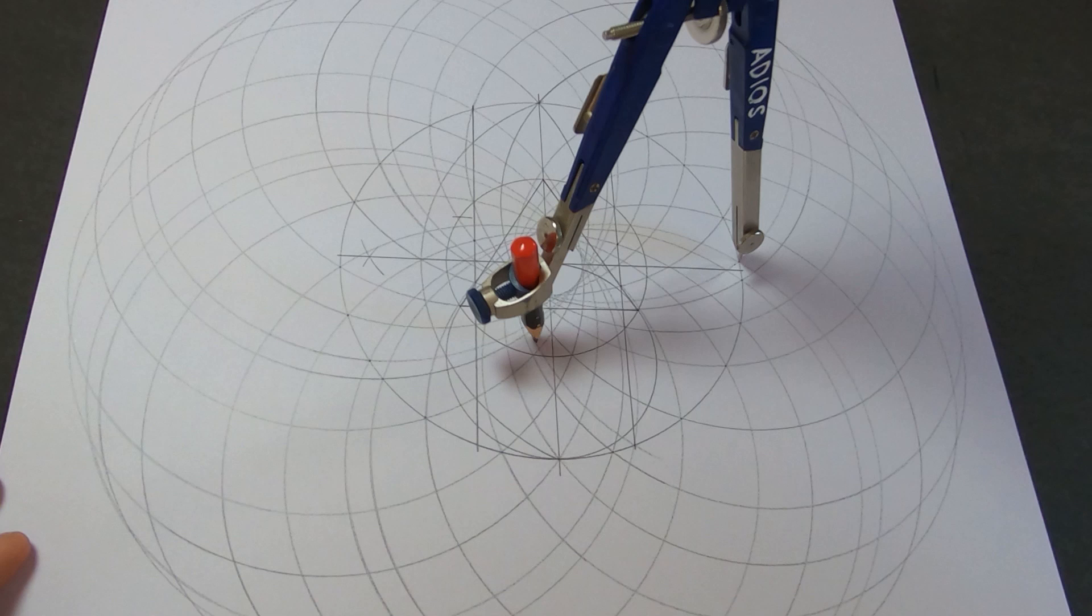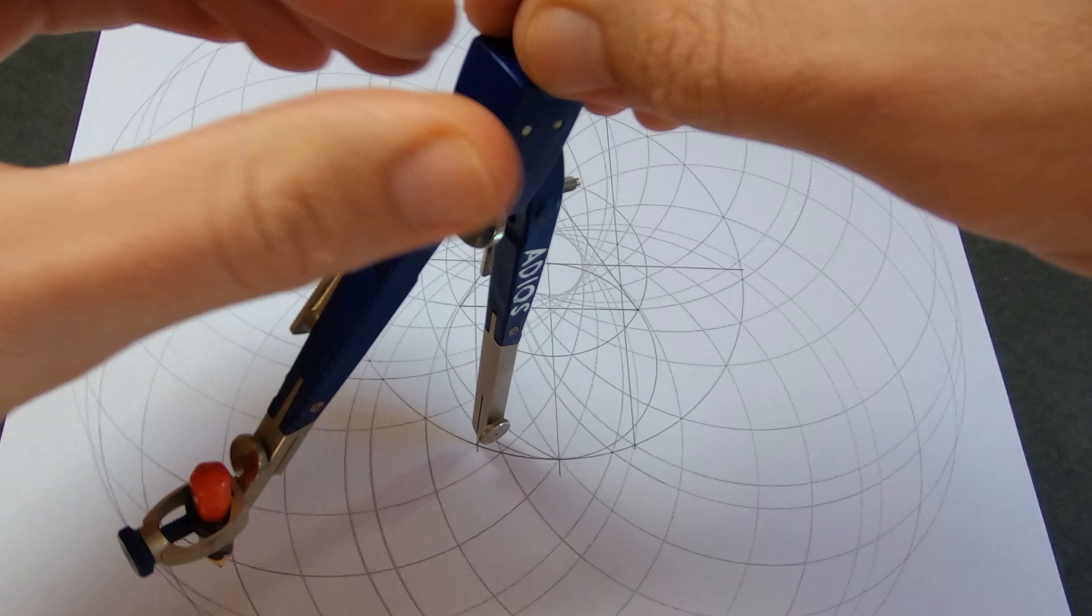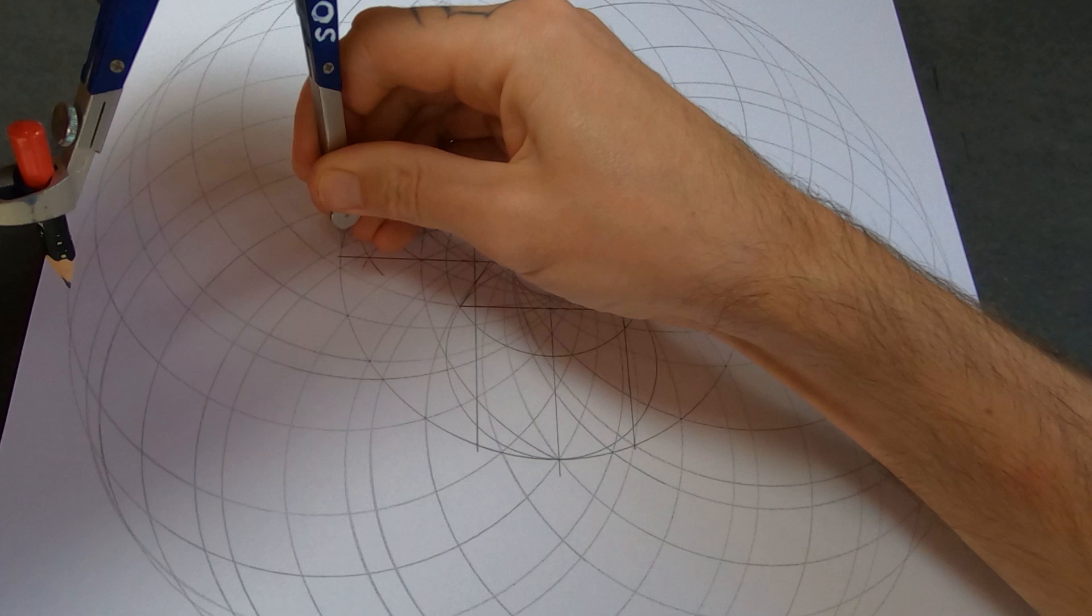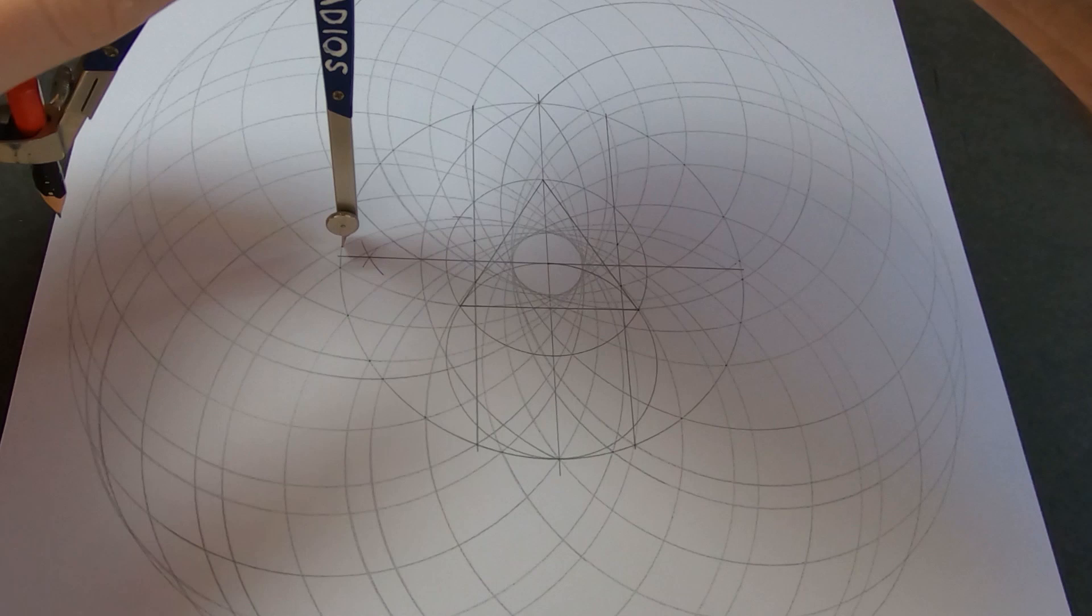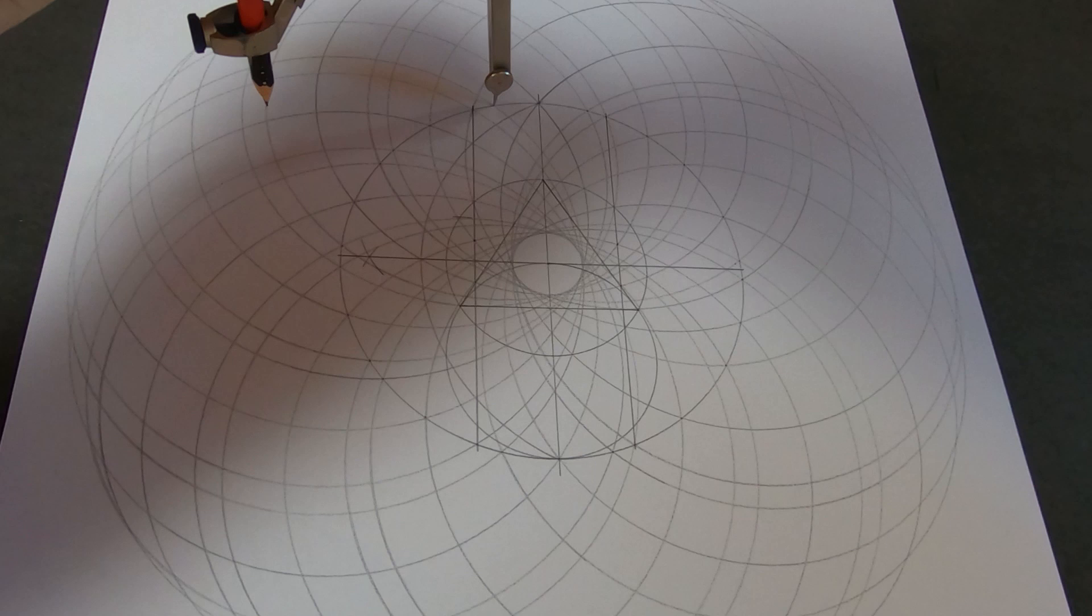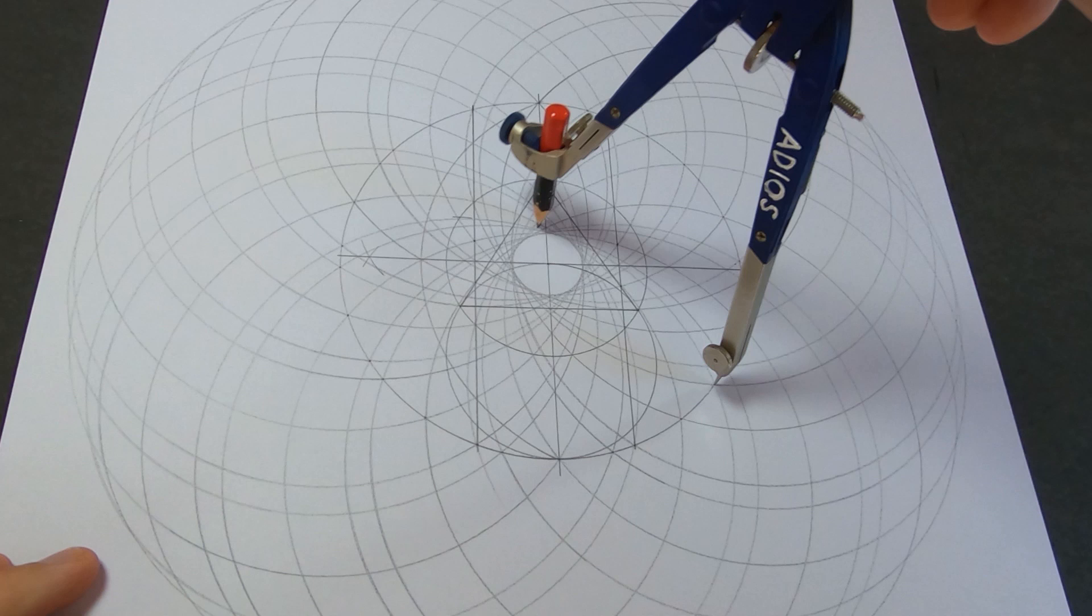Alright now we're up to 25 circles. I'll move over to the last point to draw our next set of 5 to bring us to 30 circles. Alright that's the last circle.